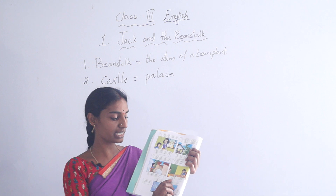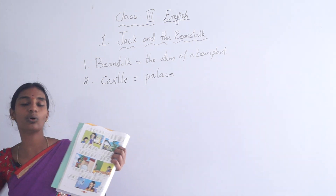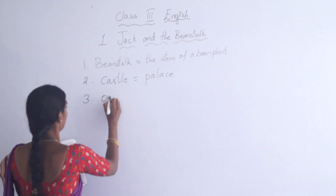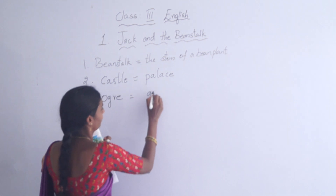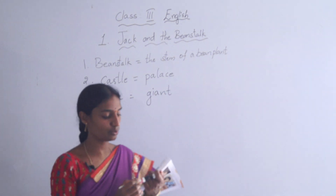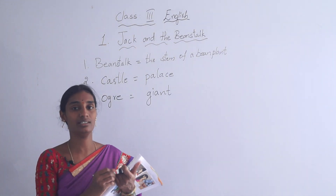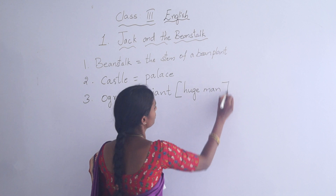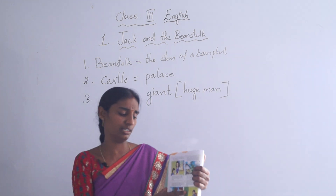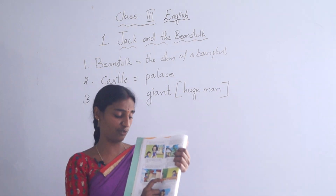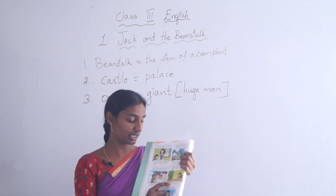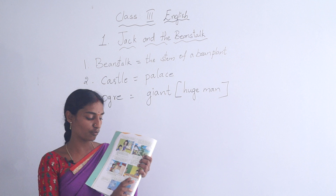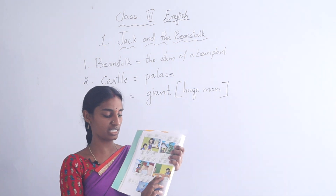Suddenly in that castle a lady entered. That lady is the ogress. Here you have to know who is an ogre. Ogre means giant — a huge man. This giant is very bad, but his wife, the ogress, is very innocent and very kind. Looking at that boy sitting near the table having the pie, she offered some more breakfast to him.